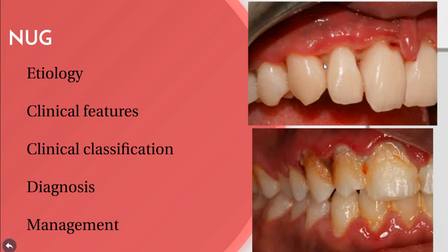The systemic predisposing factors include nutritional deficiency — for example, vitamin B12 deficiency, vitamin B2 deficiency, and vitamin C deficiency. These kinds of deficiency may systematically lead to acute necrotizing gingivitis. We also have debilitating diseases that depress the immunity of the patient, such as chronic diseases like leukemia, aplastic anemia, syphilis, severe gastrointestinal disturbance, and AIDS — all acting as systemic predisposing factors.